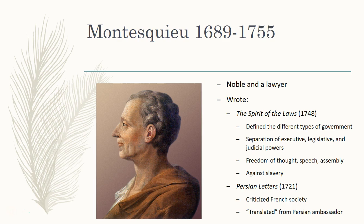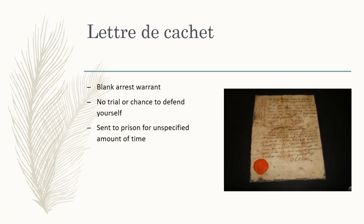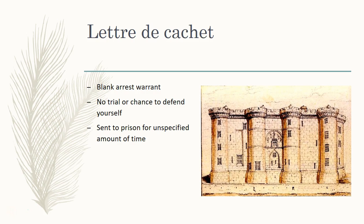Why did he need to hide his criticism behind this theoretical Persian ambassador? Basically, he did not want to receive a lettre de cachet. This was a blank arrest warrant — an offended noble could just write someone's name on it, and that person would be arrested without a trial, with no chance to defend themselves. Once arrested, they would be sent to a prison for an unspecified amount of time — it could be a day, a week, months, years. There was going to be no trial.